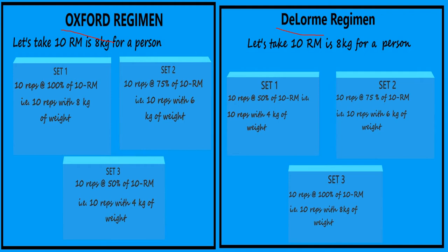The basic difference between the Oxford and the Delorme is the resistance. In the Oxford Regimen, the resistance keeps decreasing with every set. For example, in set 1 you deal with 100% of 10RM, in set 2 with 75% of 10RM, and in set 3 with 50% of 10RM. In the Delorme Regimen, set 1 is 50% of 10RM, set 2 is 75% of 10RM, and set 3 is 100% of 10RM — the resistance increases progressively.